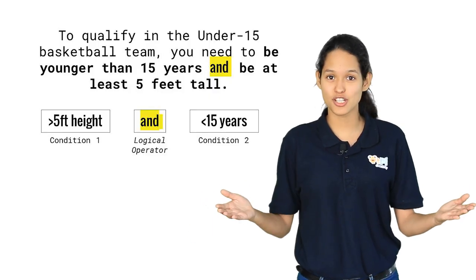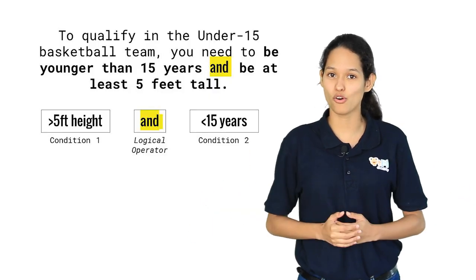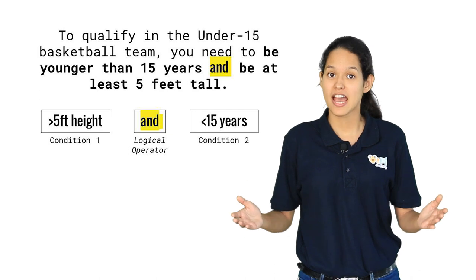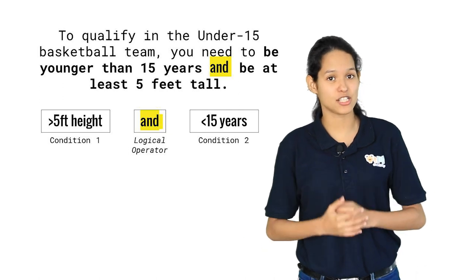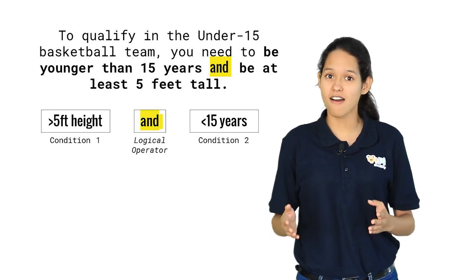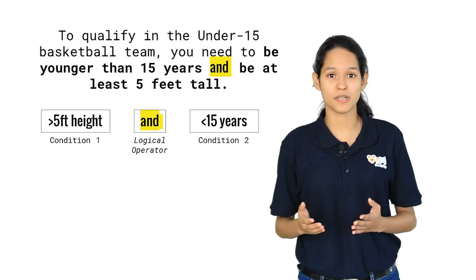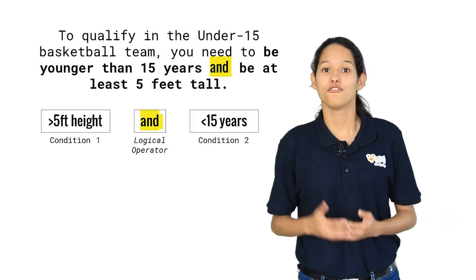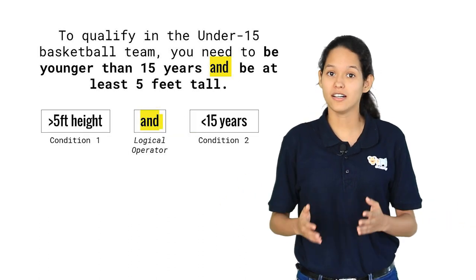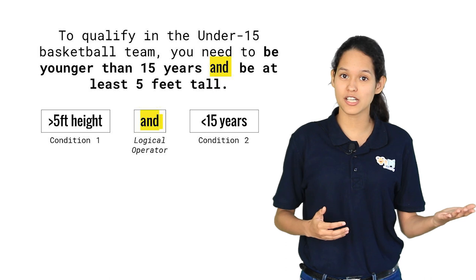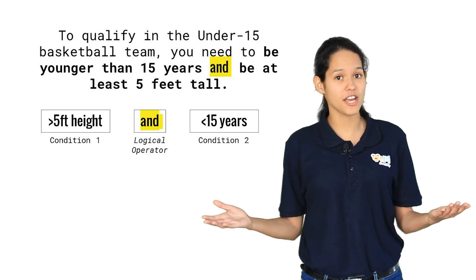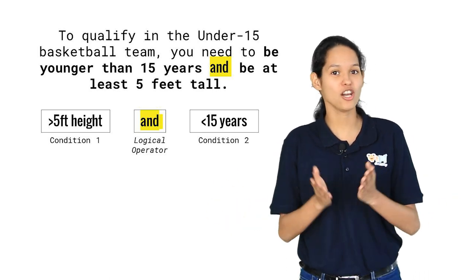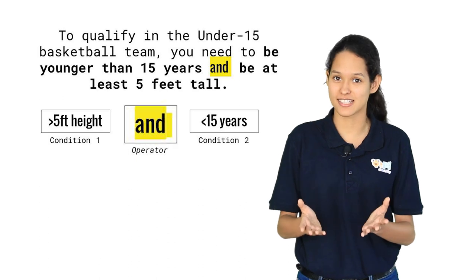Here's an example. Imagine your basketball coach is conducting selections for the under 15 team and the criteria for qualification are you have to be under 15 years of age and 5 feet tall. Here, under 15 years of age and 5 feet tall are the two conditions, and the logical operator used is AND.